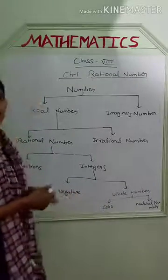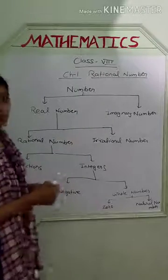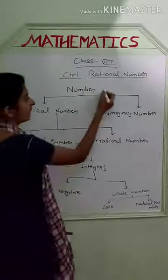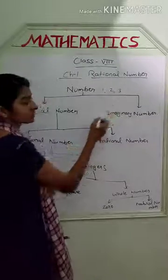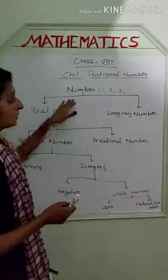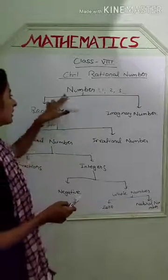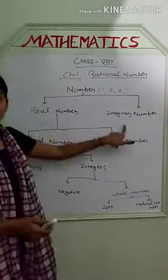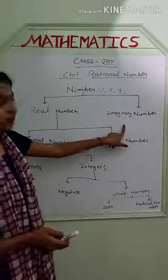So first of all, let us come to the number. As you know, numbers are 1, 2, 3 — these are numbers. Numbers are divided into two parts: one is real numbers and the other is imaginary numbers.